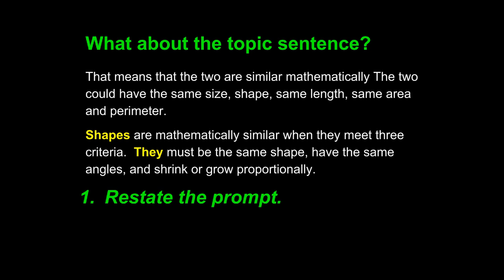In that, it restates the prompt. The second sentence also adds an answer. The math teacher now knows that the writer understands that they are talking about shapes and what the answer is to mathematical similarity. When you are writing a topic sentence, make sure to do both: restate the prompt and add an answer. When you are restating the prompt, focus on the important noun — in this case, shapes.